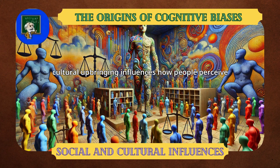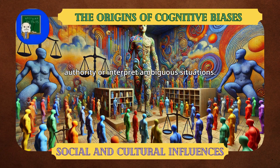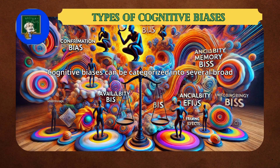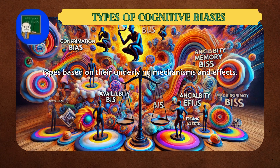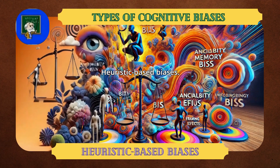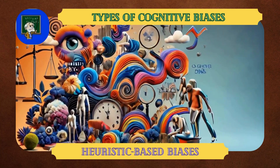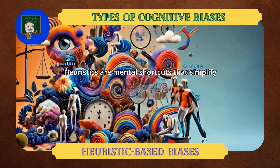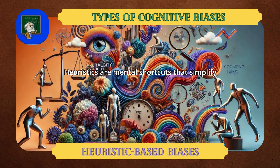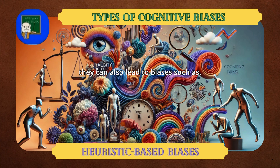Similarly, cultural upbringing influences how people perceive authority or interpret ambiguous situations. Cognitive biases can be categorized into several broad types based on their underlying mechanisms and effects. Heuristic-based biases: heuristics are mental shortcuts that simplify complex decision-making processes. While useful, they can also lead to biases.